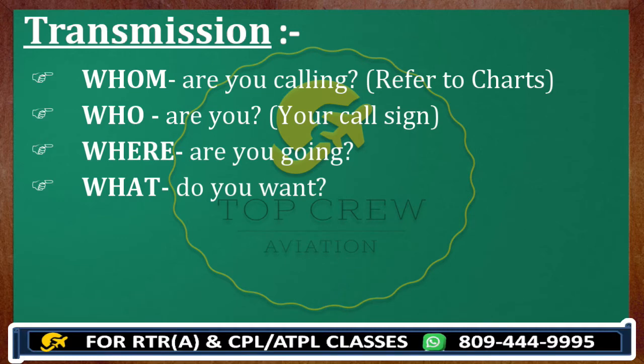For 'where are you going,' you should know about your routes. And 'what do you want' means: what is your intention, and what kind of help or clearance you are looking for from ATC. These are the basics of transmission.